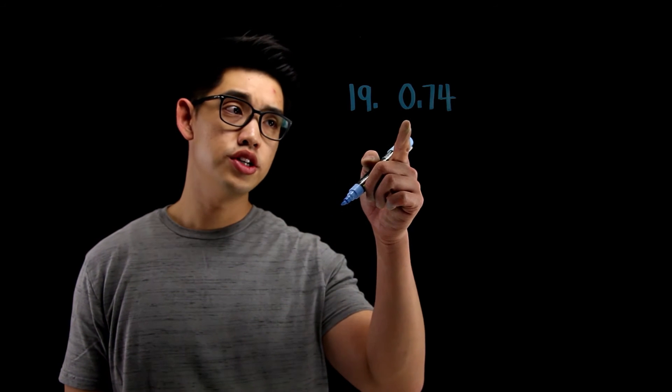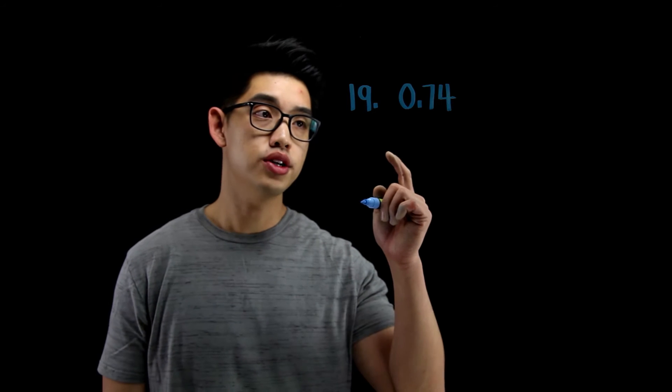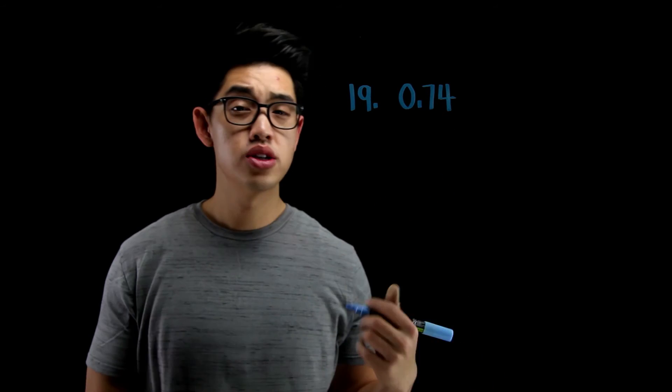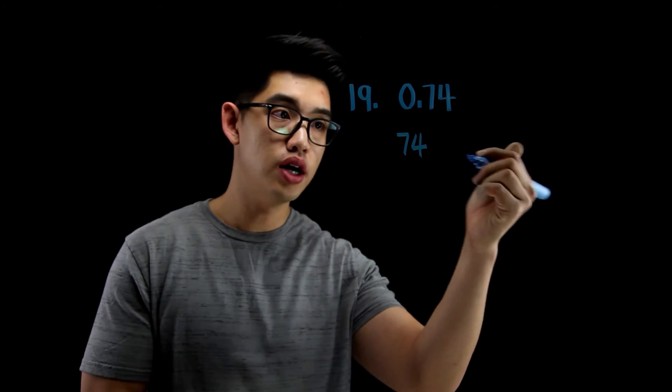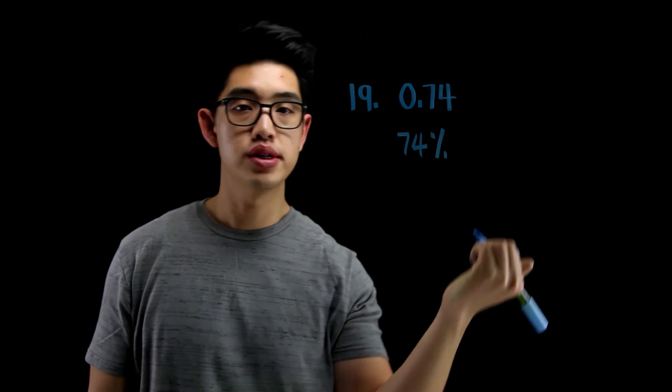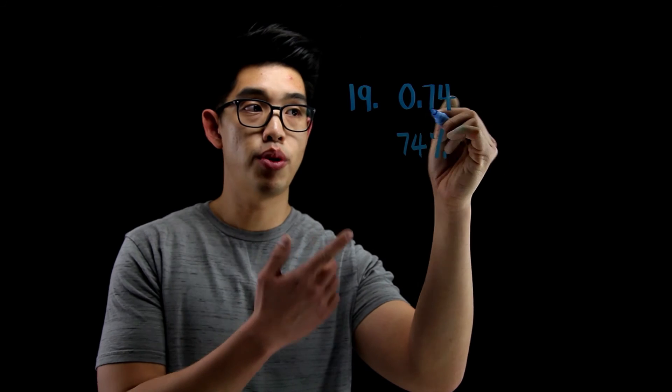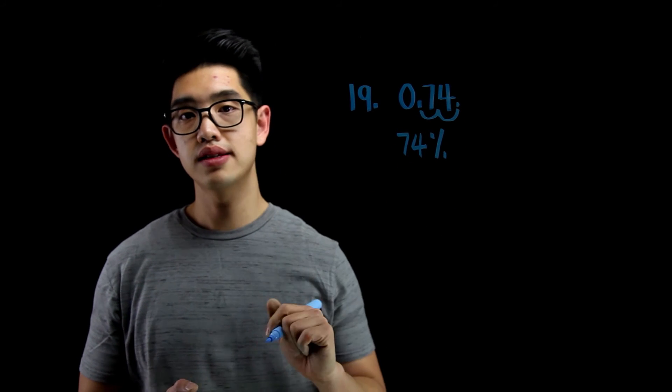Number 19, I need to change 0.74 into a percent. Dude, this is so easy. Oh my gosh. So, again, this is 74 hundredths. So, that's the same thing as writing 74 over 100 or 74 percent because per 100. We're going to write 74 percent. That's your answer or you could just do the shortcut. You can just multiply 0.74 by 100 and move the decimal point to the right two times and then you get 74 percent. And that's your answer.